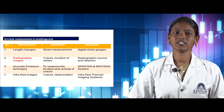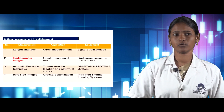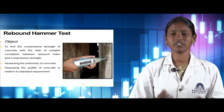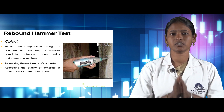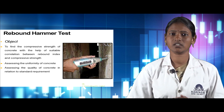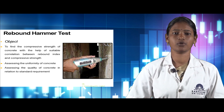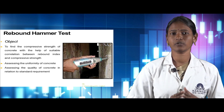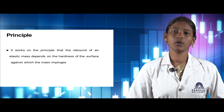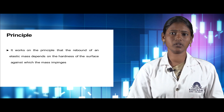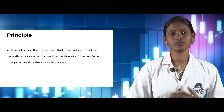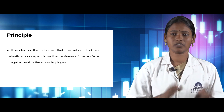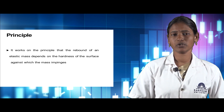The first type of non-destructive testing technique is the rebound hammer test. The objective of the rebound hammer test is to find the compressive strength of concrete using a suitable correlation between the rebound index and compressive strength. It is used for assessing the uniformity of concrete and for assessing the quality of concrete in relation to standard requirements.